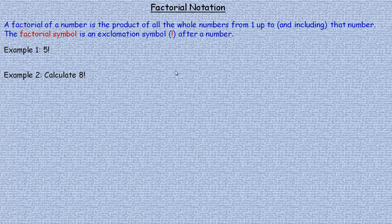In this tutorial we'll take a look at factorial notation. A factorial of a number is the product of all the whole numbers from 1 up to and including that number. The symbol for factorial notation is an exclamation symbol.